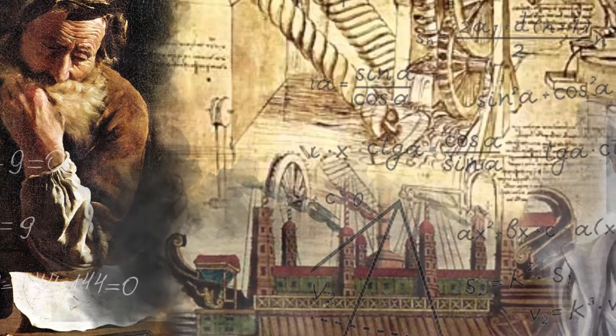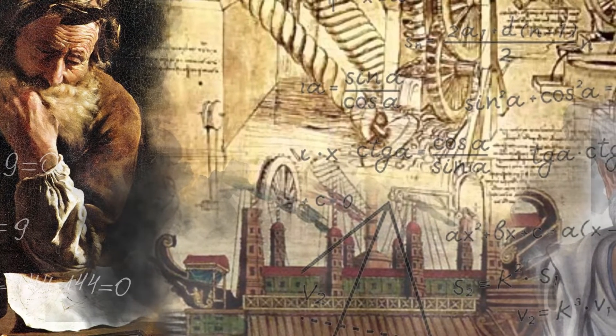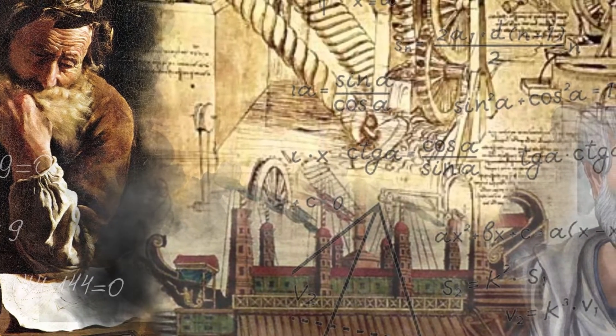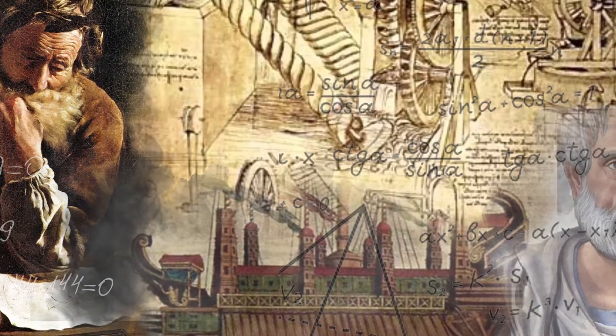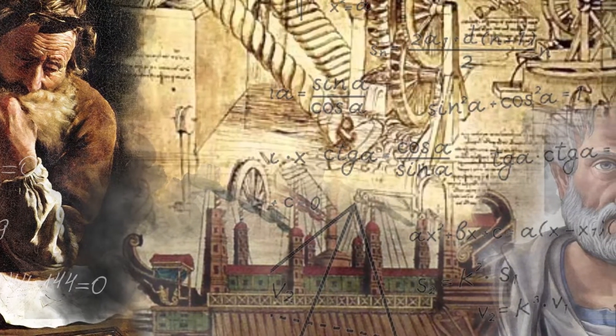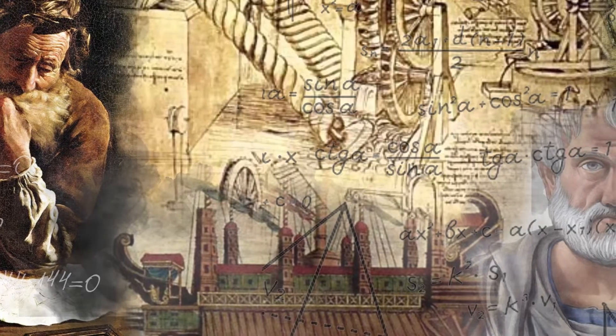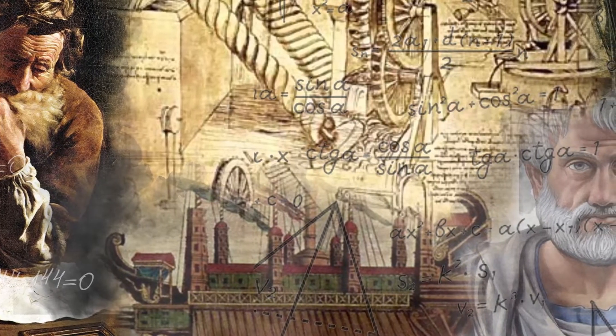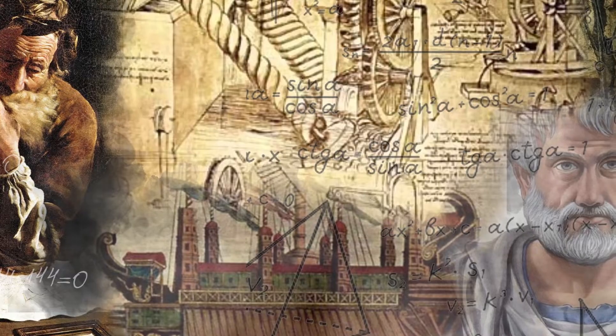After launching the Syracusia, he is reported to have told King Hieron, give me a place to stand and I will move the earth. Events like this made Archimedes a legend in his own lifetime, and have established him as the greatest inventor of ancient times.